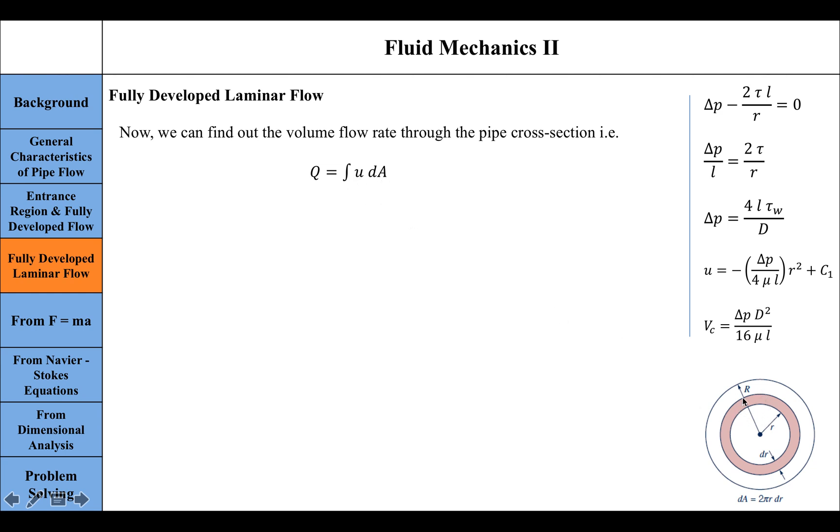Looking at the pipe cross-section here, we chose this strip, an arbitrary strip of thickness dr. This entire pipe's area dA would be equal to the circumference, which is 2πr, multiplied by the thickness dr. That is what we substitute here for the area element.